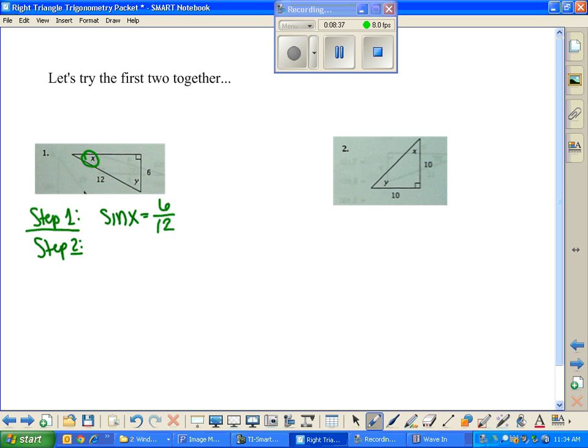Step two. Let's isolate X. How do we isolate X? Sine inverse, both sides. Eliminates the sine on this side. We have sine inverse of 6 over 12. Step 3, calculate. Make sure you type it in correctly. Use second sine, that'll give you sine inverse, of 6 over 12. Answer, anyone? 30 degrees, that is what I got. 30 degrees, very nice.